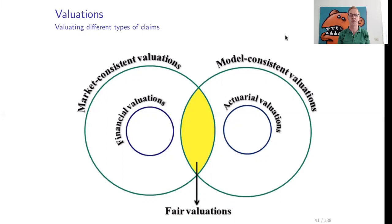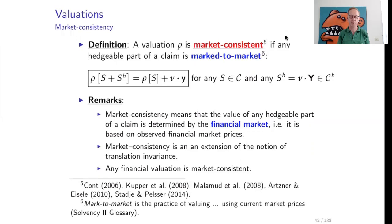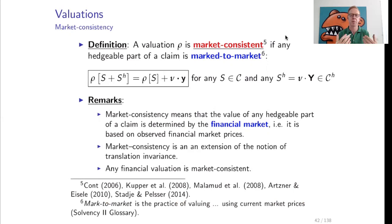A fair valuation is one that is at the same time market consistent and model consistent. Let us now translate these concepts into mathematical terms. A valuation rho will be called market consistent if any hedgeable part of a claim is marked to market. Mark to market, from the Solvency 2 glossary, means the practice of valuing using current market prices.